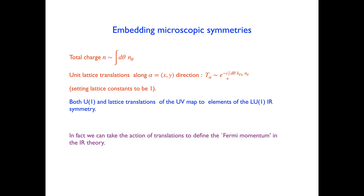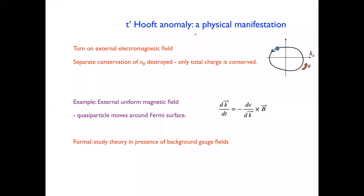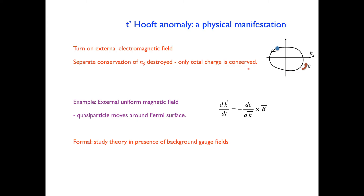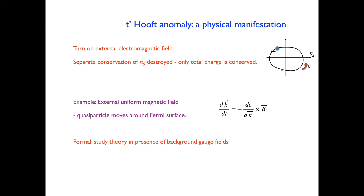This emergent symmetry of the Fermi liquid has a physical manifestation. In an external electric field, the entire Fermi surface gets displaced in the direction of the field, which destroys the separate conservation of all the n(theta)'s — only the total charge is conserved. In a uniform external magnetic field, the quasi-particle moves around the Fermi surface through a v cross B force, which also destroys the separate conservation of each n(theta) but preserves the total charge. Let's now study this formally by coupling to background gauge fields.